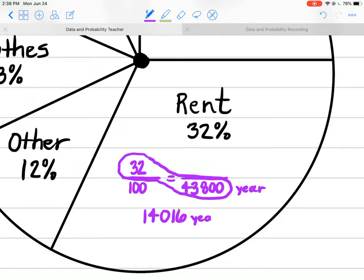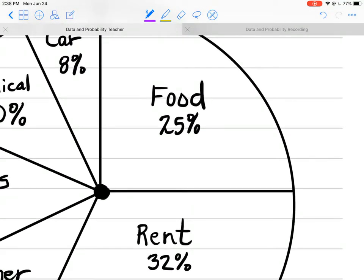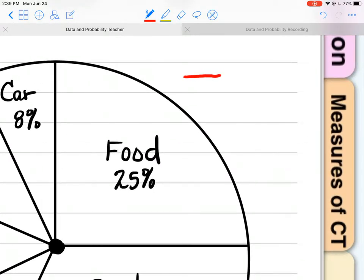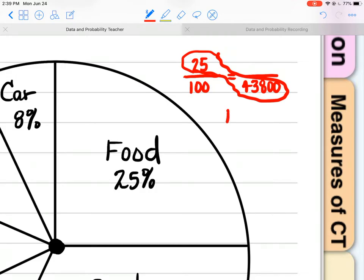I multiplied the peanut and divided by the 100. Let's scroll up here to food. I'm going to get a different color. So percent over 100, 25 over 100. And remember, we're working with the yearly income, $43,800. Draw the peanut and multiply that. Divide by 100, and that is $10,950 for food per year, per annum or annually.